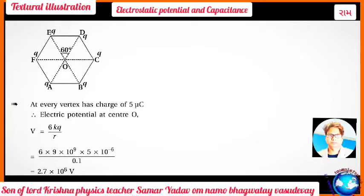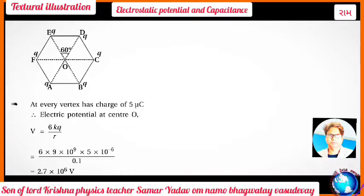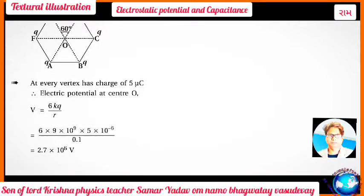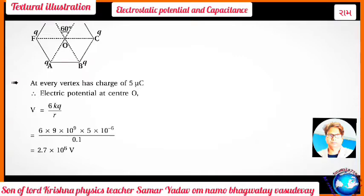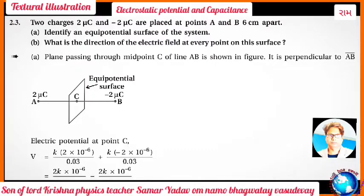Substituting values: V = 6 × 9×10⁹ × 5×10⁻⁶ / 0.1 = 2.7×10⁶ volts.